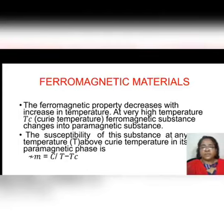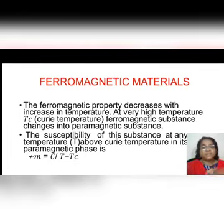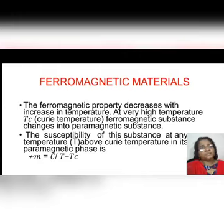The ferromagnetic property decreases with increase in temperature, and at a very high temperature — the Curie temperature — the ferromagnetic substance changes into a paramagnetic substance. When the temperature is increased, the ferromagnetic property decreases and the paramagnetic property increases. At a particular temperature, the substance entirely changes into a paramagnetic substance — that is, if we increase the temperature of a magnet, it loses its magnetic property. The susceptibility in the paramagnetic phase is given by C divided by (T minus Tc).